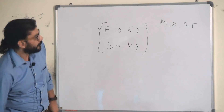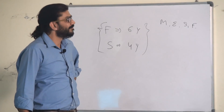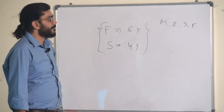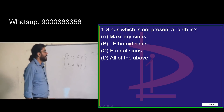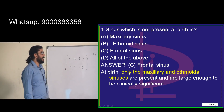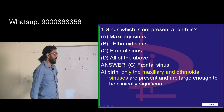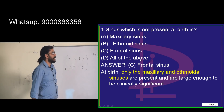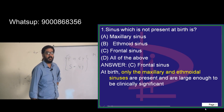The answer is frontal sinus. At birth, only the maxillary and ethmoidal sinuses are present and large enough to be clinically significant. This can also be asked as: which sinus cannot be involved at birth? To remember this, think 'ME, ME' — M for maxillary, E for ethmoidal — ME is present at birth.